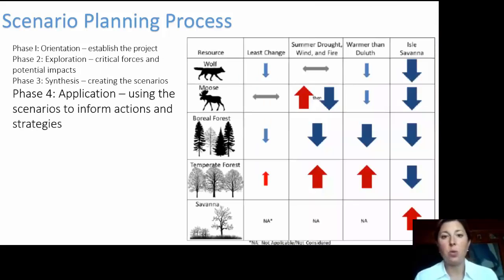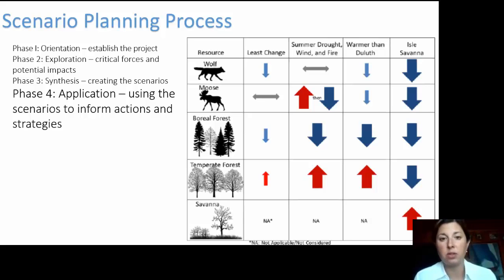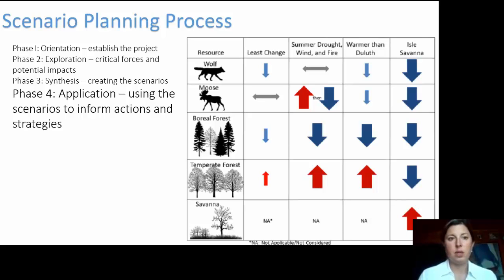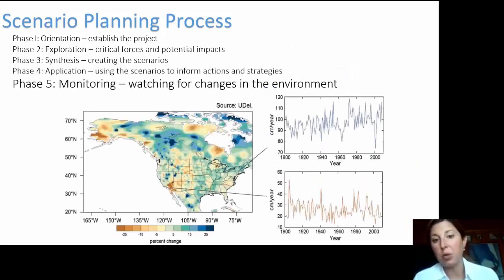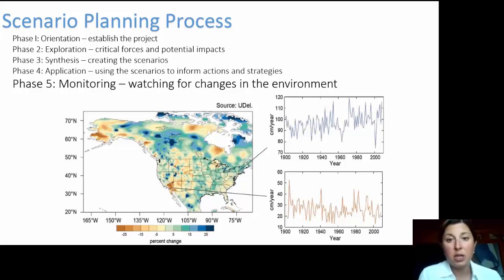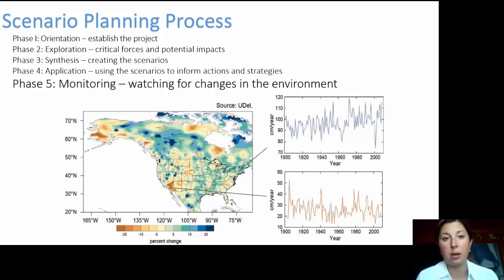Phase four is application. Once you have the scenarios, you apply them to whatever resources are important — an animal species, vegetation species, etc. The process looks at specific scenarios and determines the impacts to those different resources. Phase five is monitoring. Starting with a base of predictions, over time you can see how those predictions pan out — are they holding true, have they changed, or has something more important emerged? This is a continual process that can always be adapted to current events and evolving predictions.